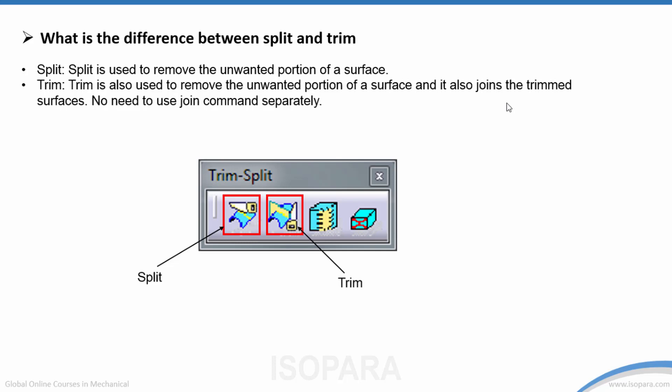Trimming is also used to remove the unwanted portion of a surface, but it also joins the trimmed surfaces together. So when splitting one surface with another, you can instead use Trim, which removes the unwanted portion and also joins the two surfaces.